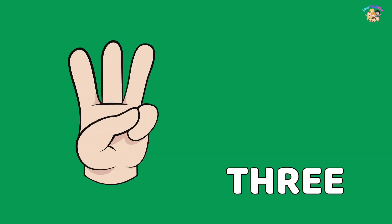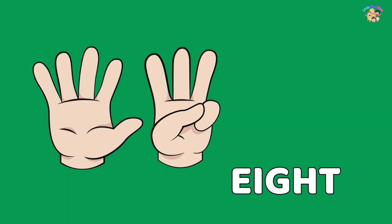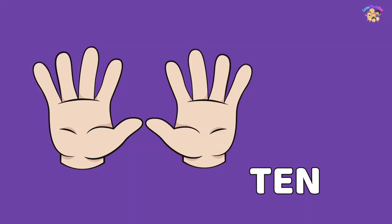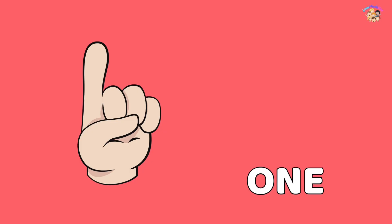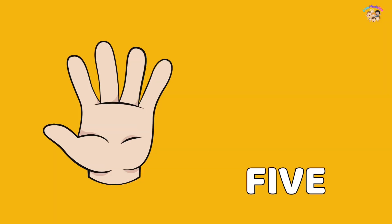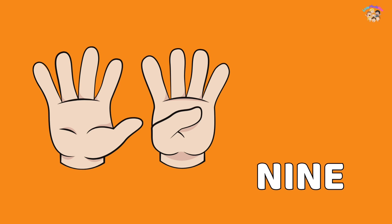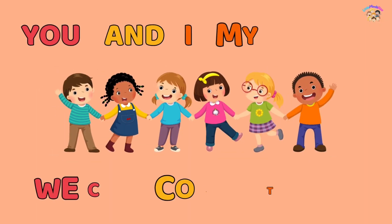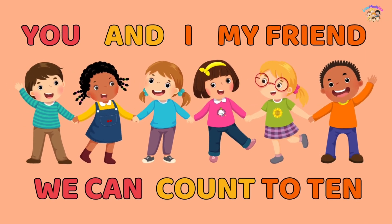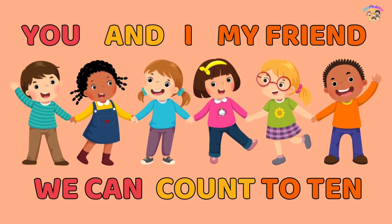One, two, three, four, five, six, seven, eight, nine, ten. One, two, three, four, five, six, seven, eight, nine, ten. You and I, my friend, we can count to ten. One, two, three, four, five, six, seven, eight, nine, ten.